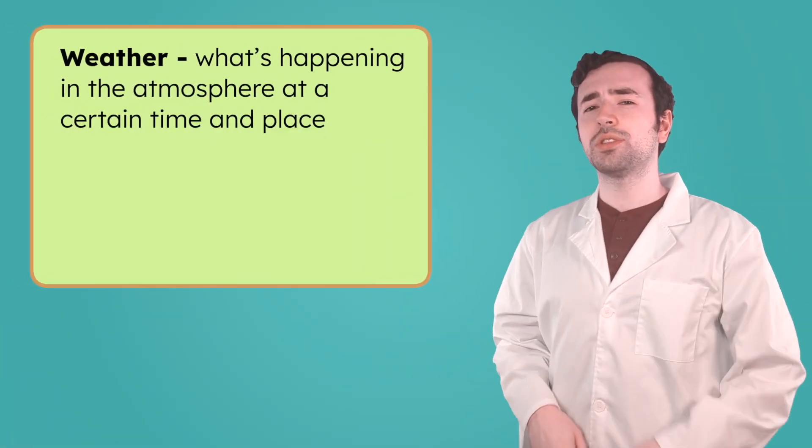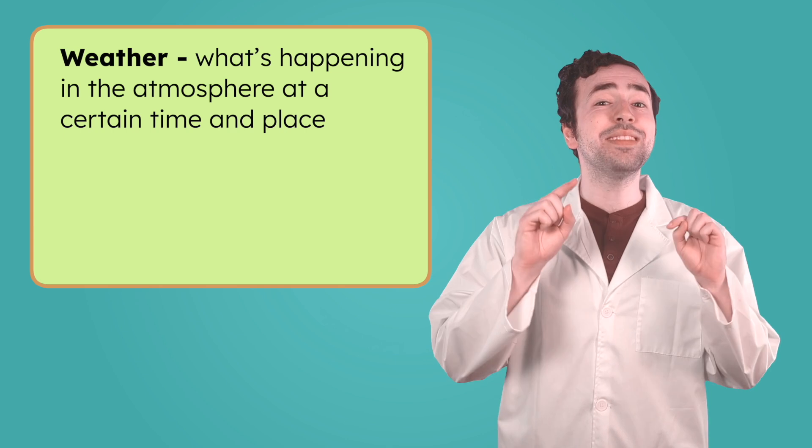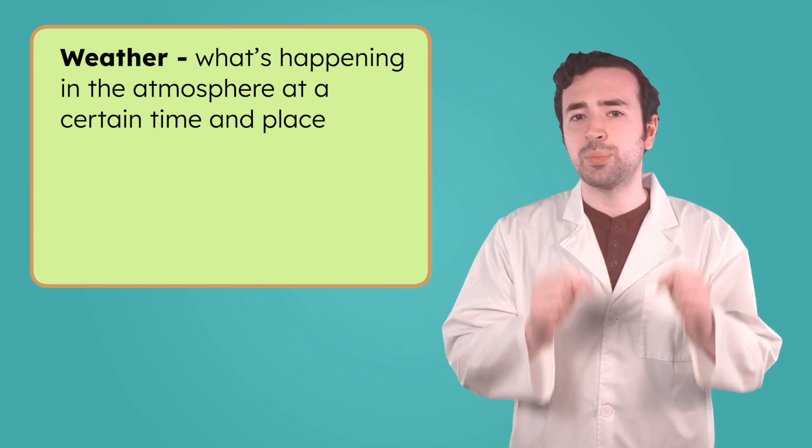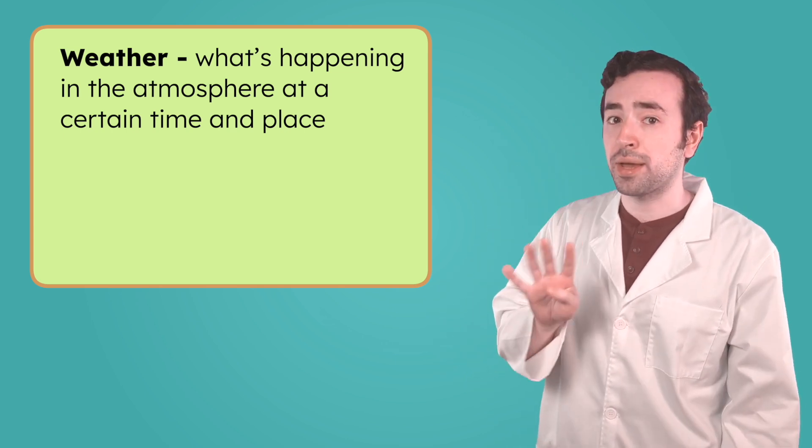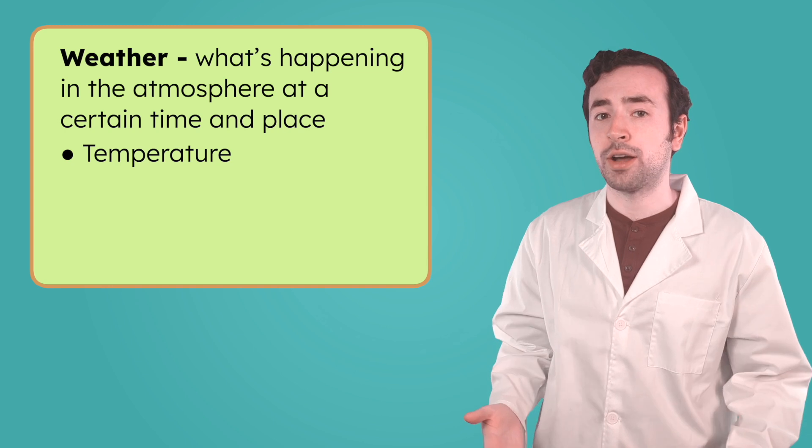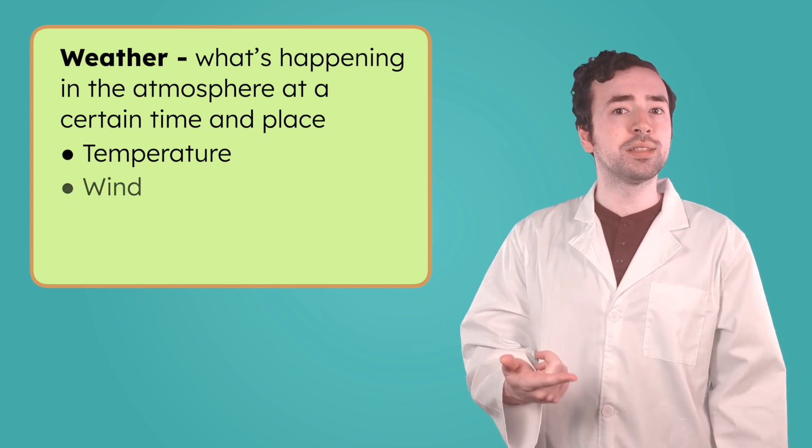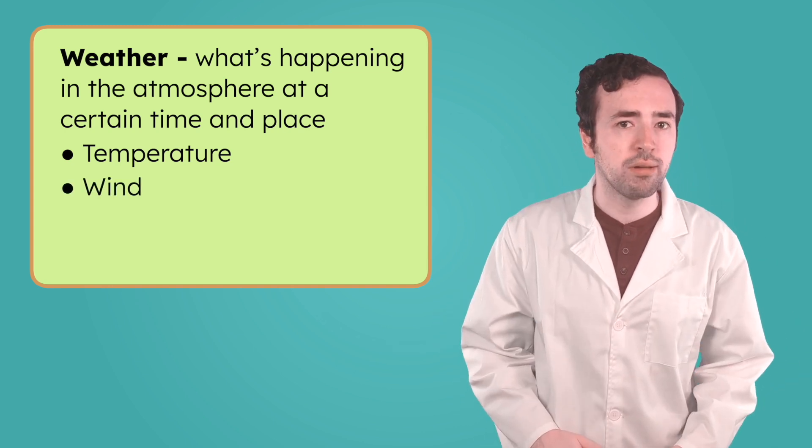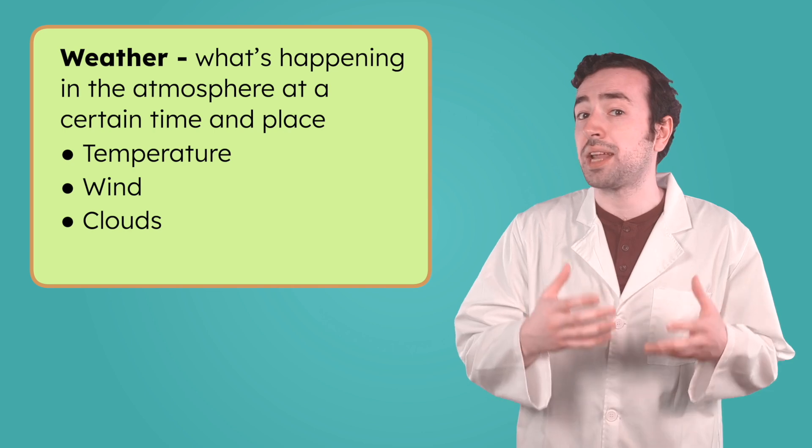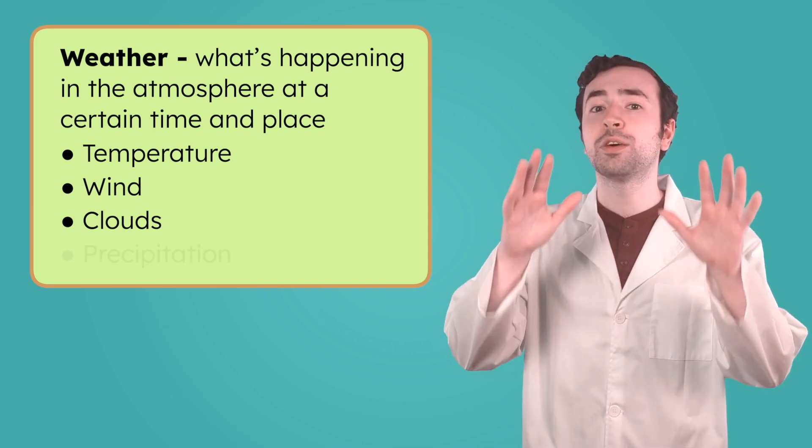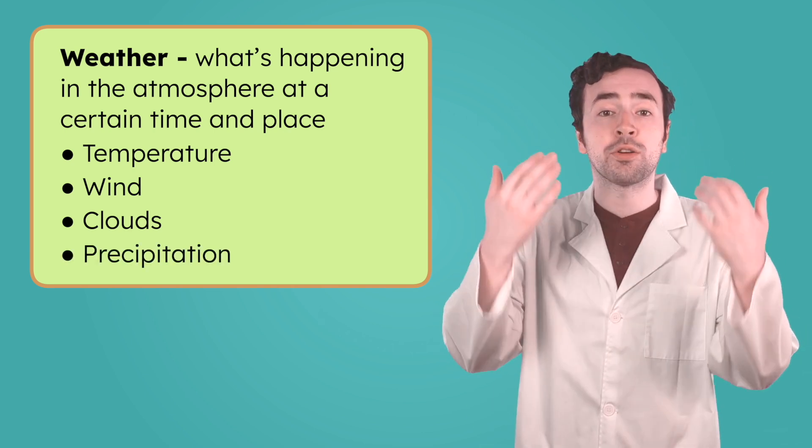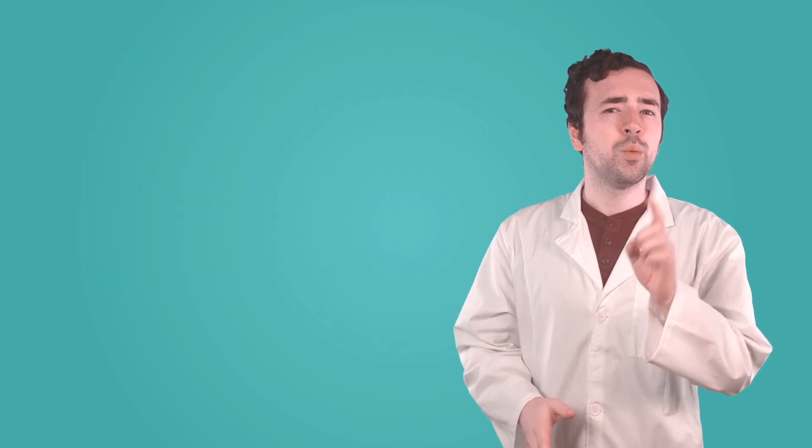In our last lesson, we learned that weather is what's happening in the atmosphere at a certain time and place. It includes four big things: the temperature, how hot or cold the air is; the wind, how fast the air is moving; the clouds, which kinds and how many are in the sky; and the precipitation, any water falling to the ground like rain or snow. What do you think makes all those things happen?